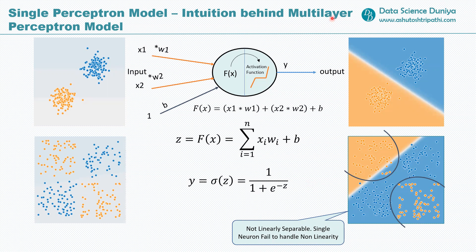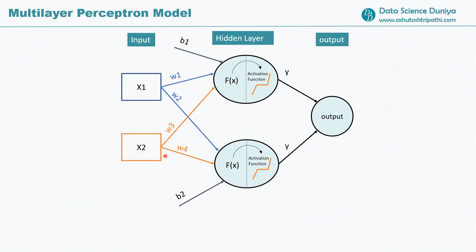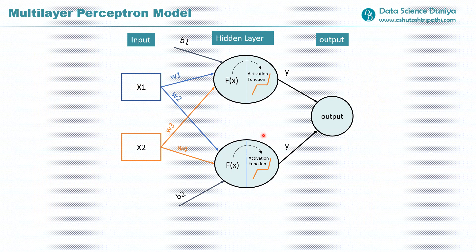That's where we need multiple perceptrons, and from there the idea of the multi-layer perceptron model comes in. Of course we can have multiple perceptrons associated together. When our problem gets complex, we apply multiple layers of perceptrons. The concept remains the same and will be applied no matter how many layers or how many perceptrons you have in each layer.